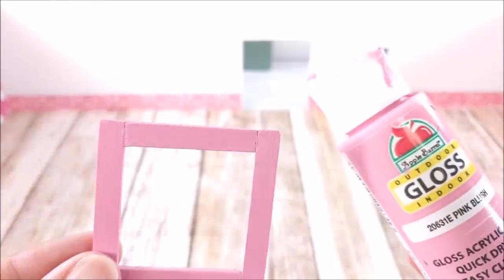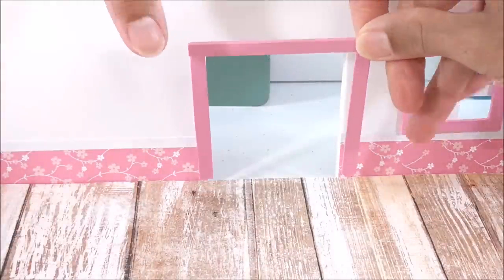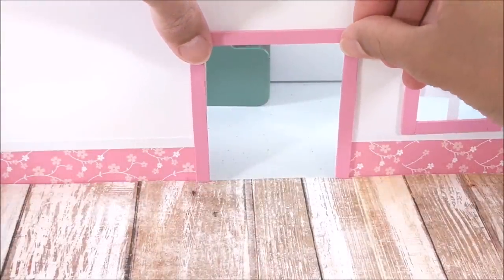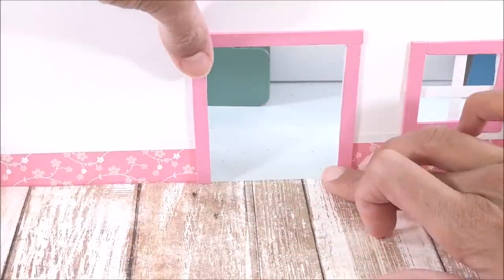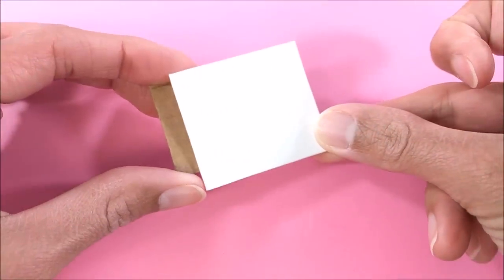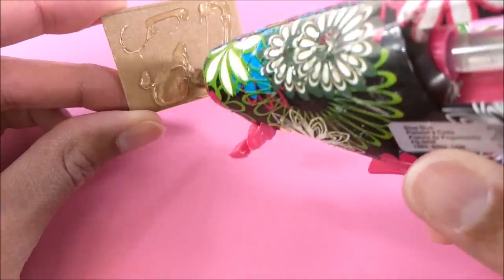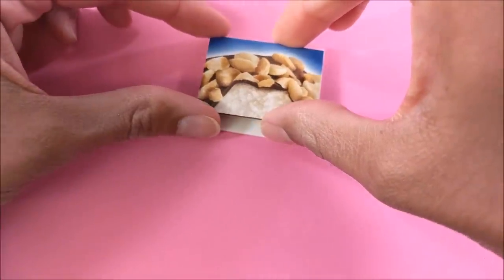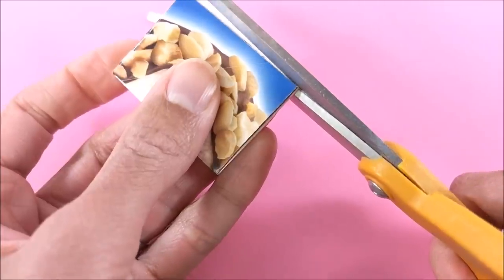For the kitchen counter and sink, I start with the sink, gluing craft foam to cardboard, then glue more craft foam around the edges.